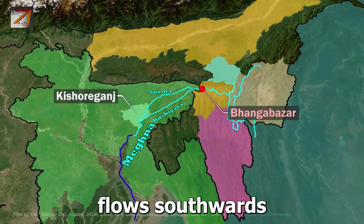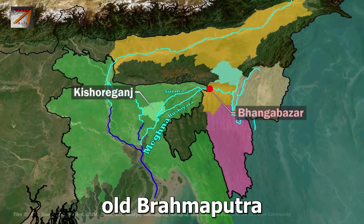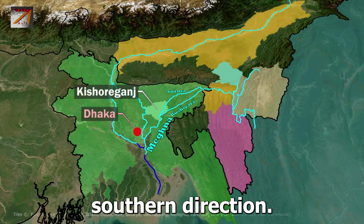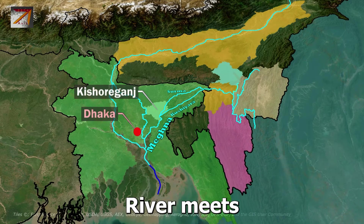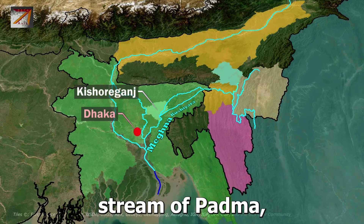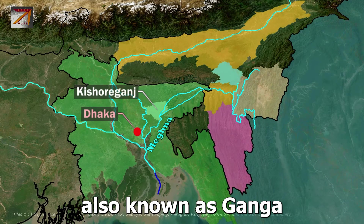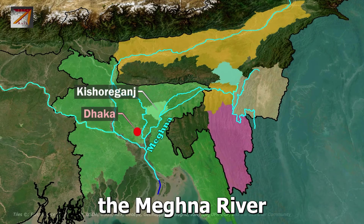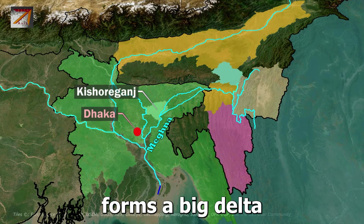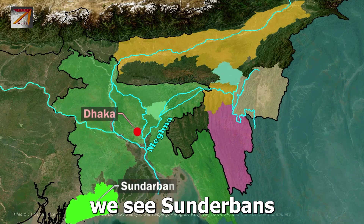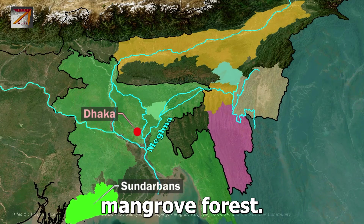The Meghna flows southward and meets the Old Brahmaputra near Dhaka. Continuing south, the Meghna meets the Jamuna River — the combined stream of the Padma (Ganga) and Brahmaputra. Finally, the Meghna forms a large delta and enters the Bay of Bengal. On the delta of Meghna River, we see the Sundarbans mangrove forest.